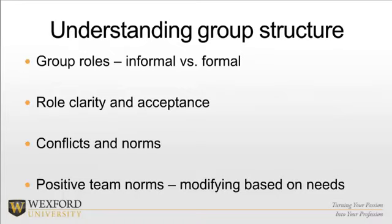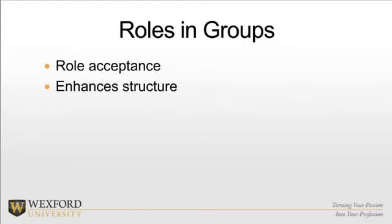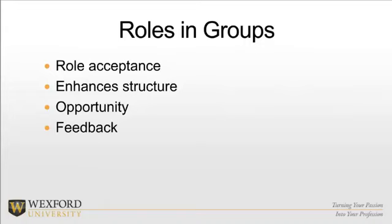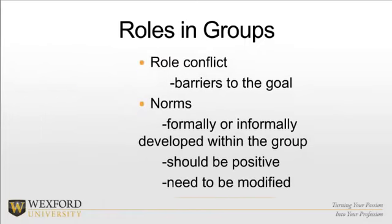Unclear roles tend to hurt a team's performance. Role acceptance is also very important to enhance a group's structure, and coaches can help by minimizing status differences among roles and emphasizing that the team's success depends on each individual's contribution. Role acceptance depends on four conditions: first, the opportunity to use specialized skills; second, feedback and role recognition; third, role significance; and finally, autonomy, or the ability to work individually and effectively within the group. Role conflict exists when the role occupant doesn't have sufficient ability, motivation, time, or understanding to achieve a particular goal.